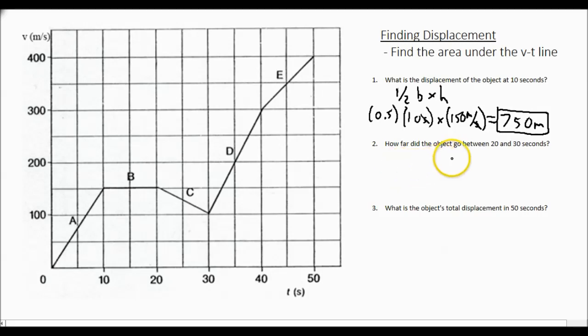Second example, how far did the object go between 20 and 30 seconds? Now in this case, we have a strange shape. But we can take this shape, and we can divide it up into a triangle and a rectangular square.